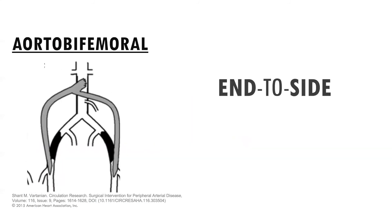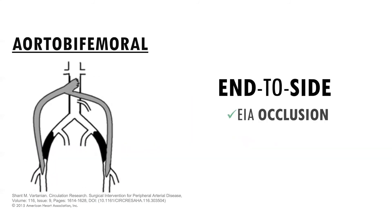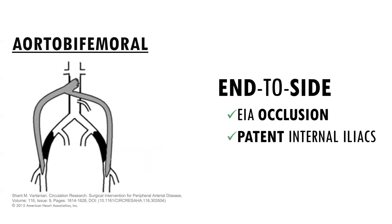An end-to-side anastomosis is preferred if the external iliacs are occluded but the internal iliacs are patent, to maintain blood flow to the pelvis. This also preserves the inferior mesenteric artery, which can be an important source of collateral blood flow to the pelvis. If the pelvis is devascularized, there is increased risk of impotence, post-op colon ischemia, buttock ischemia, and paraplegia from spinal cord ischemia.